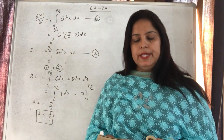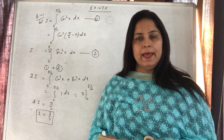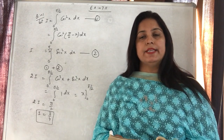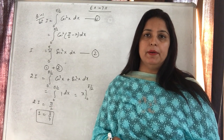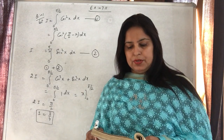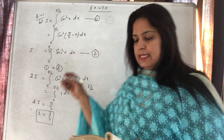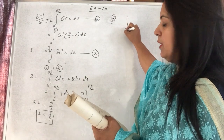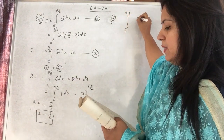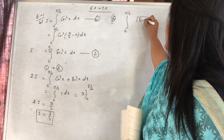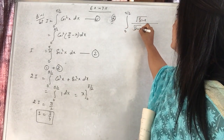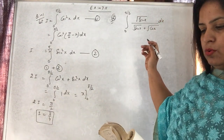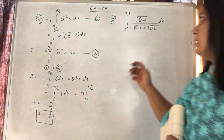Second, third, fourth — tino questions aapke paas same hain. Lekin in mein sirf dekhne mein lagta hai ki statement under root mein hai, ya power mein hai, ya power fraction mein hai. Toh hum ek question aur solve karte hain. Question number 2 dekhein — kyunki limit bhi sabke same hai, 0 to π/2: root sin x upon root sin x plus root cos x. Aise hi questions third aur fourth hain jismein power 3/2 hai ya power 5 hai, function same hai.